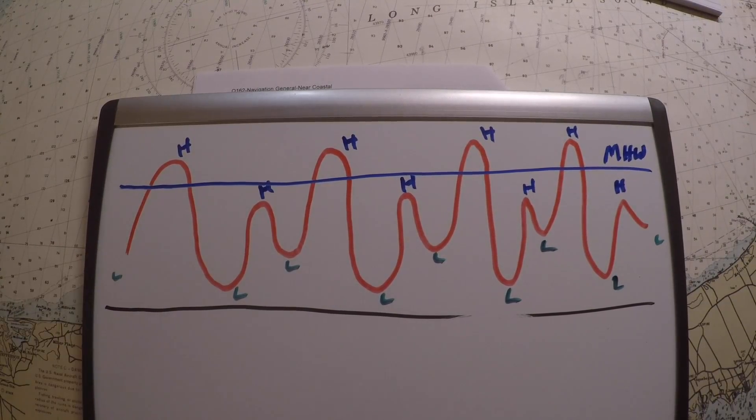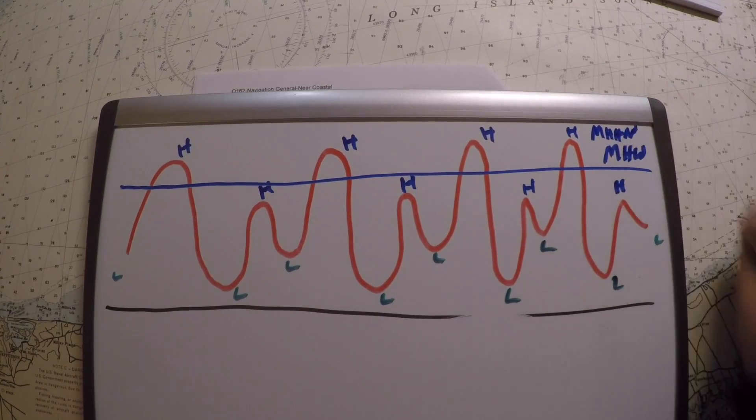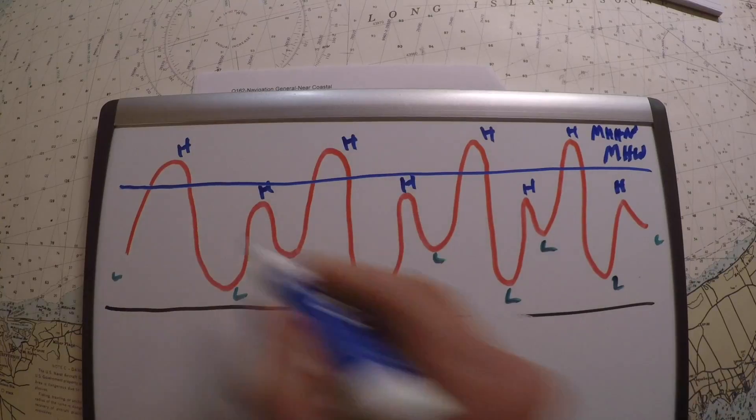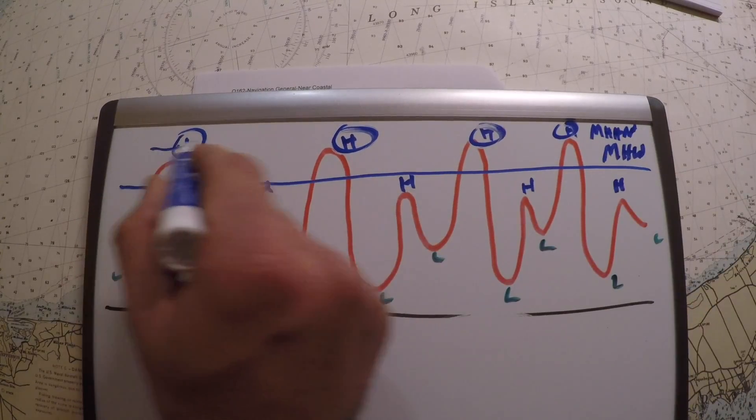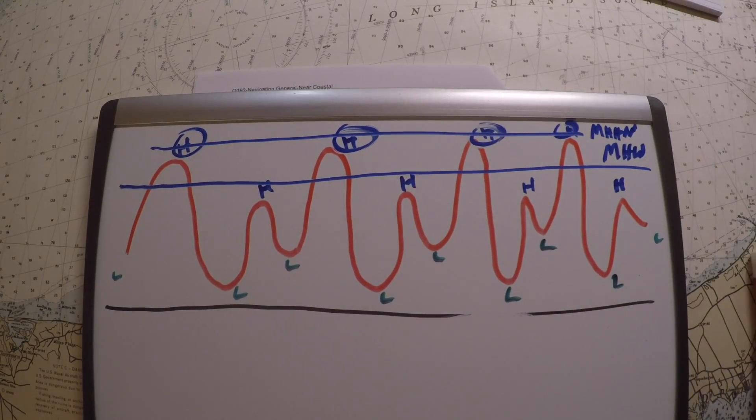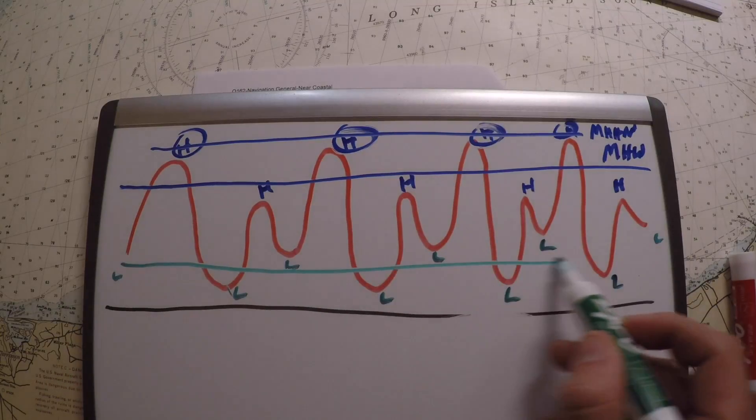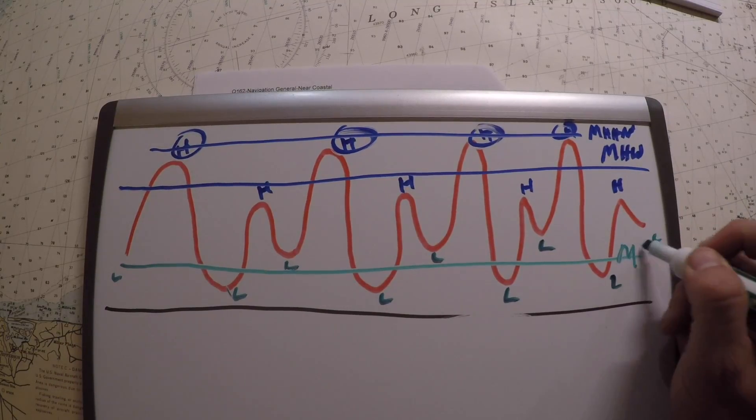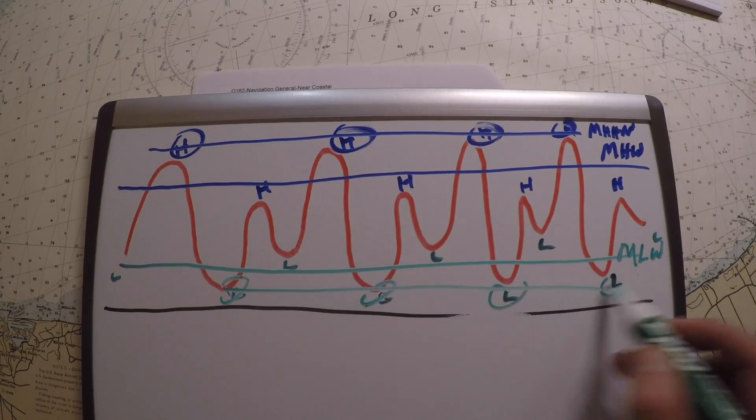The other thing you might see is something called mean higher high water, MHHW, and that's if you just took the biggest tides over the course of a period. What you're more familiar with probably is if you averaged out all the lows, the big ones and the little ones, you might get mean low water. And then if you took just the lowest ones and average them out, you'll get mean lower low water, MLW.